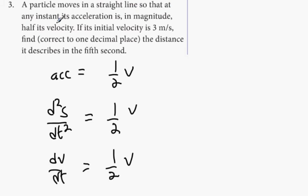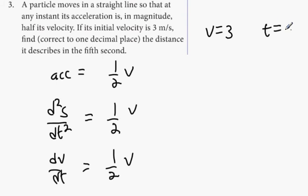The particle moves in a straight line so that at any instance the acceleration in magnitude is half its velocity. The initial velocity is 3. This means that when T equals zero, V equals 3.